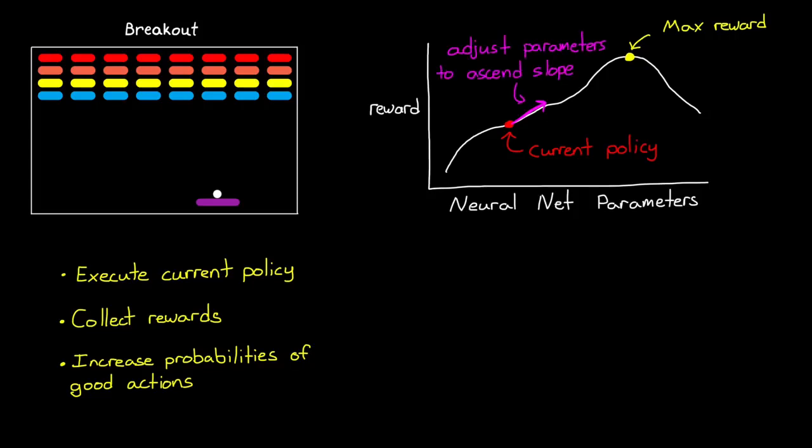If the paddle went left, missing the ball, causing a negative reward, then change the neural network to increase the probability of moving the paddle right next time the agent is in that state. Essentially, it's taking the derivative of each weight and bias with respect to reward, and adjusting them in the direction of positive reward increase. In this way, the learning algorithm is moving the weights and biases of the network to ascend up the reward slope. This is why the term gradient is used in the name.